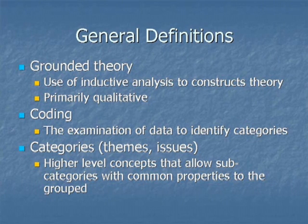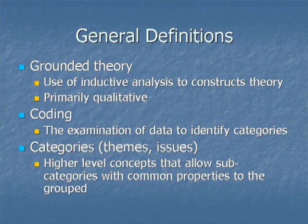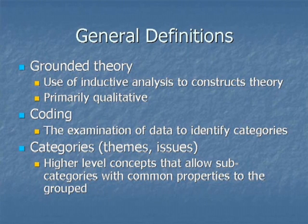Once the data is collected, the process of coding is undertaken. This is essentially the examination of the data to identify categories and subcategories, themes and issues. Categories can be described as higher-level concepts that allow subcategories with common properties to be grouped. So for example, if we have a category of quadrupeds, a subcategory might be horses, cattle, or sheep.